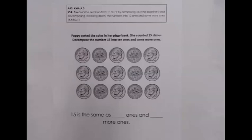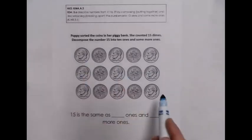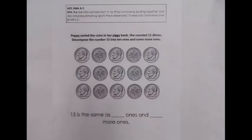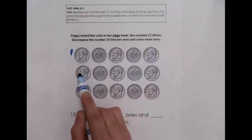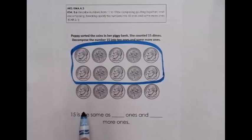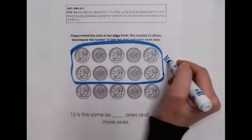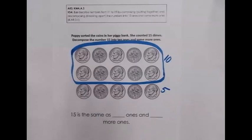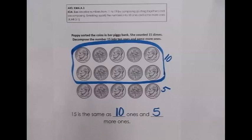Here's an example: 'Poppy sorted the coins in her piggy bank. She counted 15 coins.' Students know the whole is 15. The task: decompose 15 into 10 ones and some more ones. Students identify the group of 10 ones within the 15, count the remaining ones, and complete the sentence stem. Counting from the representation: 1 through 10 forms the group of 10, then 1, 2, 3, 4, 5 more — labeling 10 and 5. So 15 is the same as 10 ones and 5 more ones. This is another representational example of decomposing teen numbers.